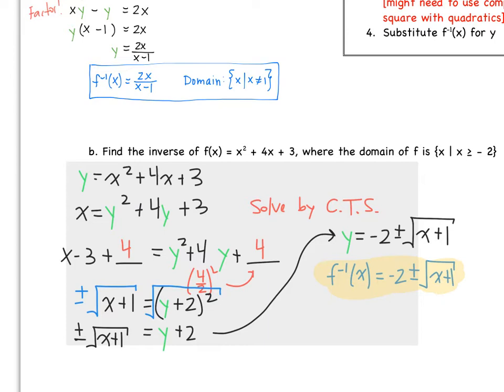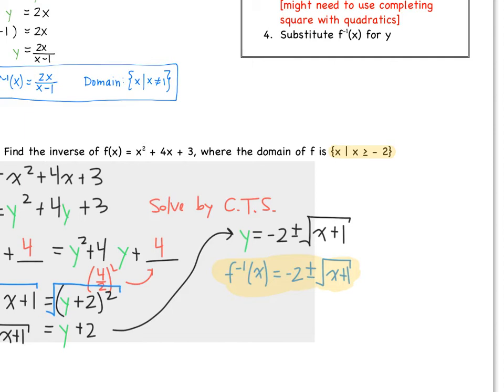Now we have to talk about the domain. They gave us that the domain of f is x ≥ −2. A key note: the domain of f is really the range of f inverse, because we just flip-flopped the x and y's. So the range of f inverse is y ≥ −2.